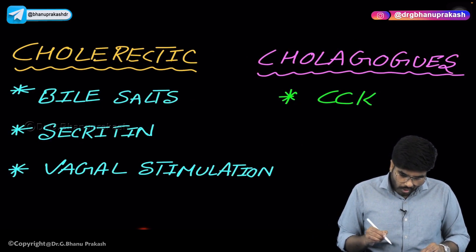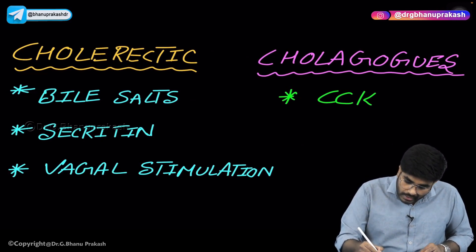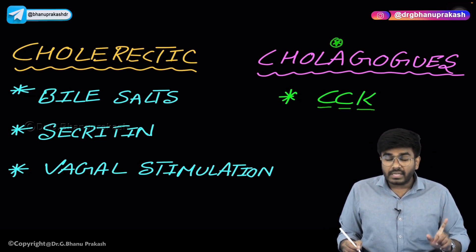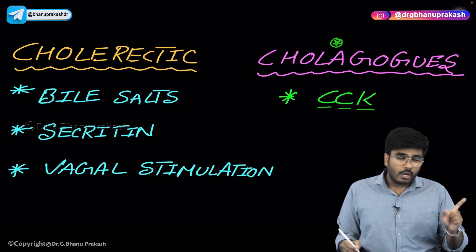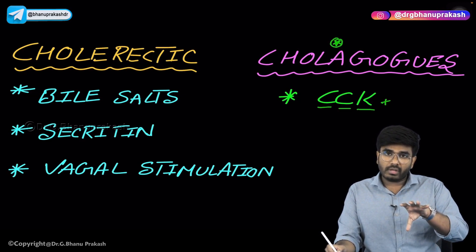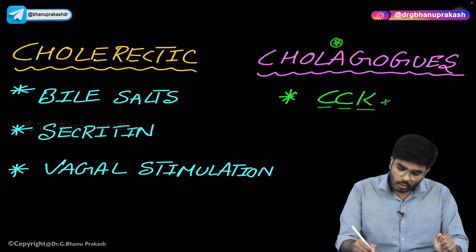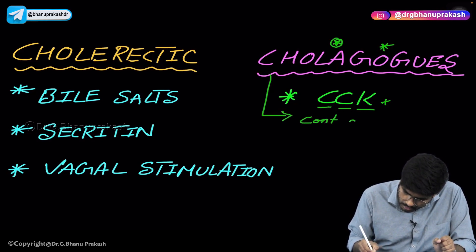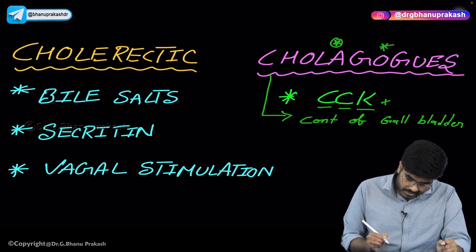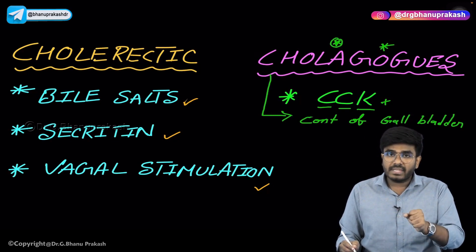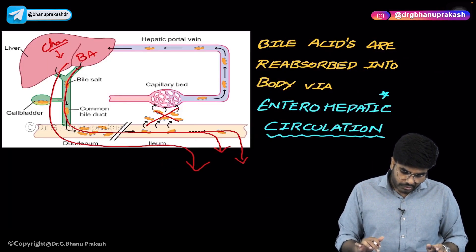Let's talk about what exactly a cholagogue and a cholerectic are. A cholagogue is cholecystokinin. Cholecystokinin comes from the I-cells. The stimulus for its release is fat-rich food — whenever there is a fat-rich food, cholecystokinin is released from the I-cells and causes contraction of the gallbladder. So a cholagogue is a substance which causes contraction of the gallbladder. A cholerectic, on the other hand, is a substance which helps in the production of bile and increases bile concentration. So cholerectic = bile production; cholagogue = bile release.